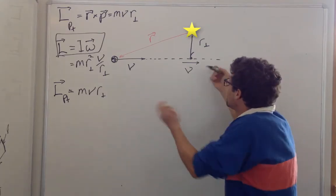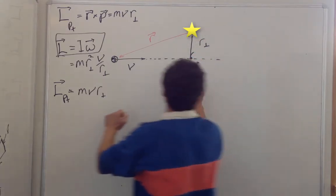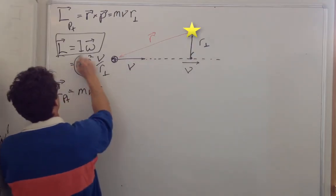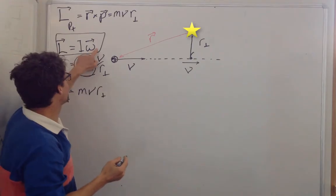And so I can just say, look, it's at some distance r perpendicular, and it has some mass. So it's moment of inertia is m r perpendicular squared. And then I have to find omega.